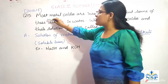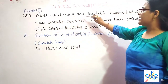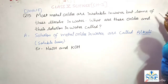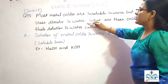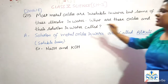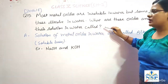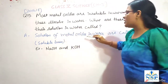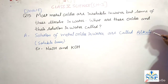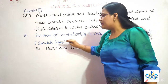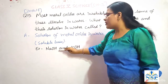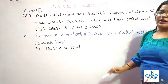Our next important question: most metal oxides are insoluble in water, but some dissolve in water. What are these oxides and their solutions in water called? Solutions of metal oxides in water are called alkalis, which means soluble base. For example, sodium hydroxide and potassium hydroxide.